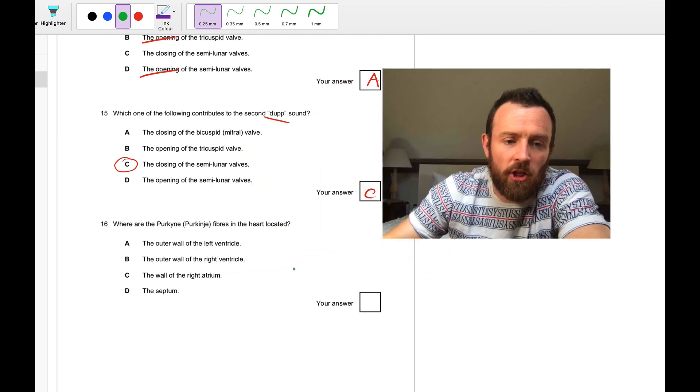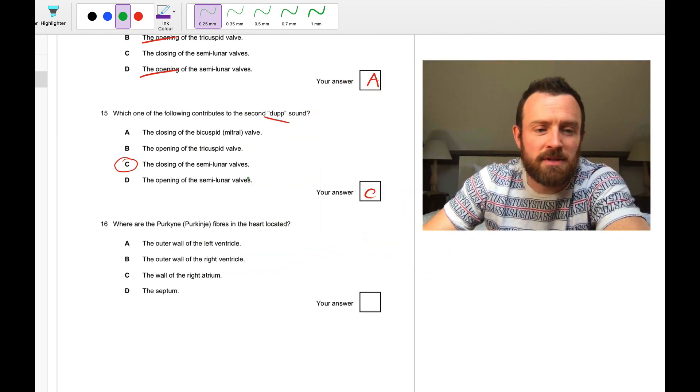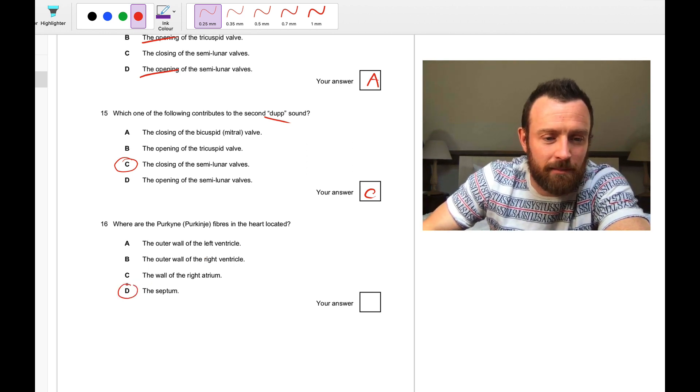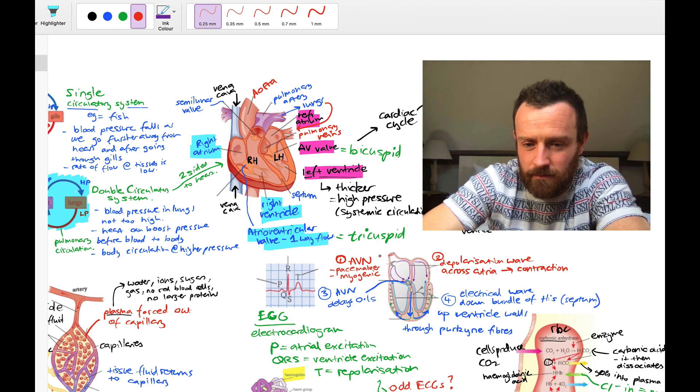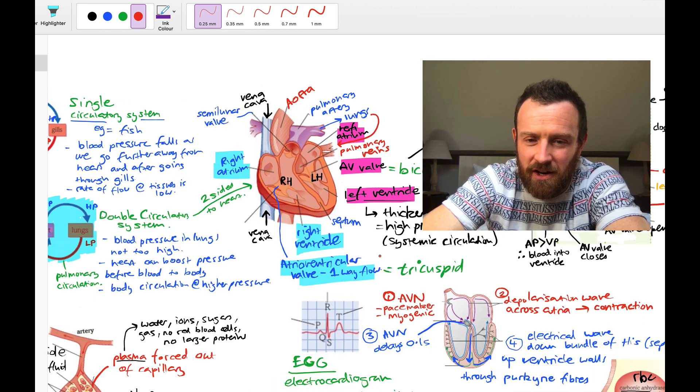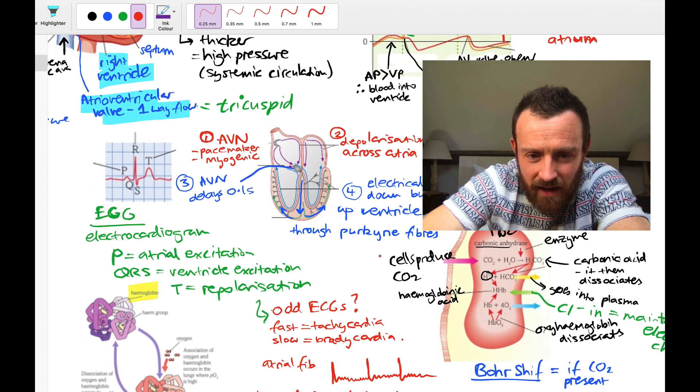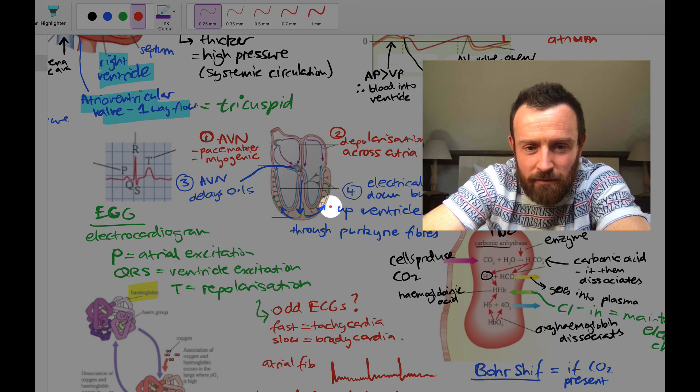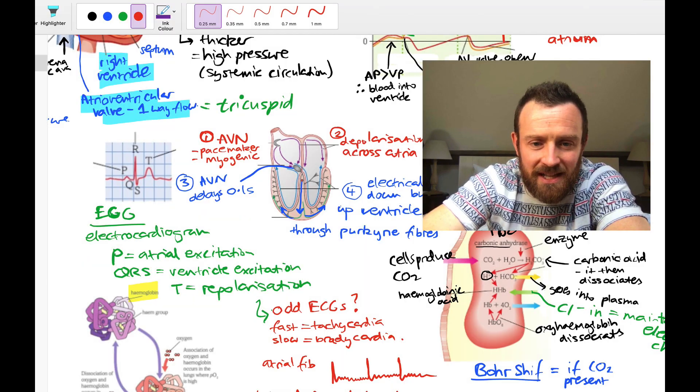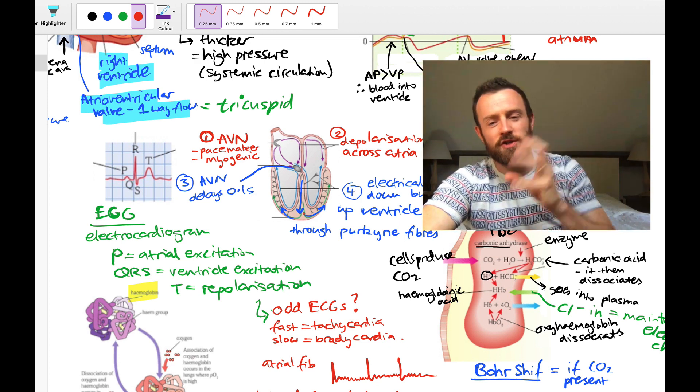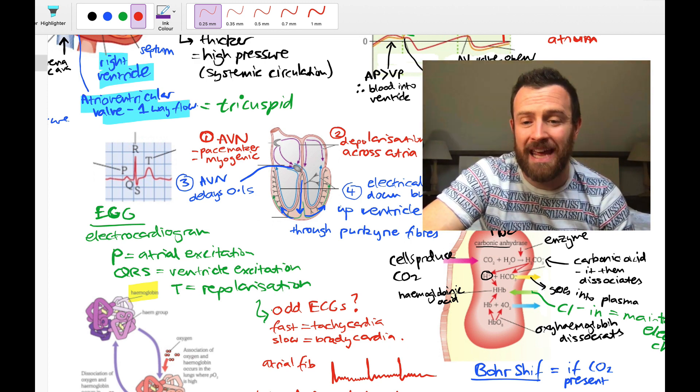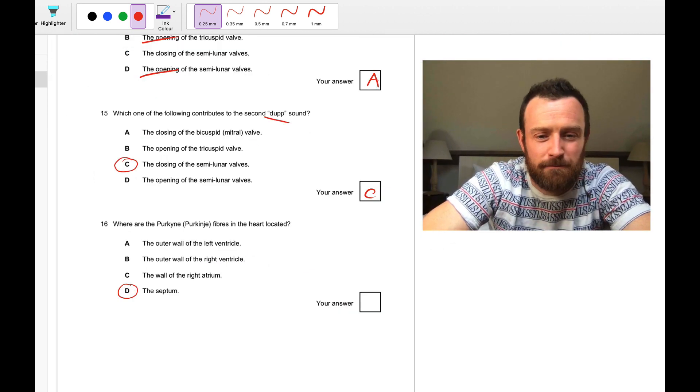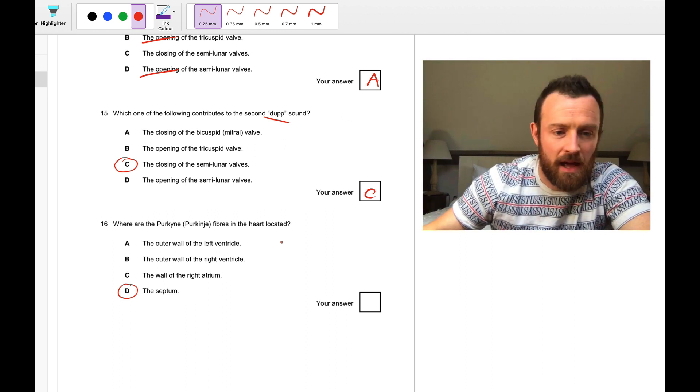Question sixteen. Where are the Purkinje fibers in the heart located? Well, I guess the best one here is probably the septum. If we look at this diagram here, they're actually in a bunch of places. But I guess there's a lot of fibers concentrated here. But then they branch out and radiate around. But probably the best one is to say the septum is where they are concentrated. And they're concentrated in this thing that we call the bundle of His, which is a bunch of these fibers running parallel. So that is the best answer.